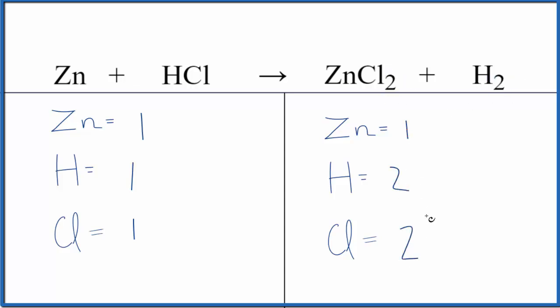It looks like we could just put a two in front of the HCl. This two, it goes to everything. So one times two for the hydrogen, two hydrogens, and one times two for the chlorine, and that's it. This equation is balanced.